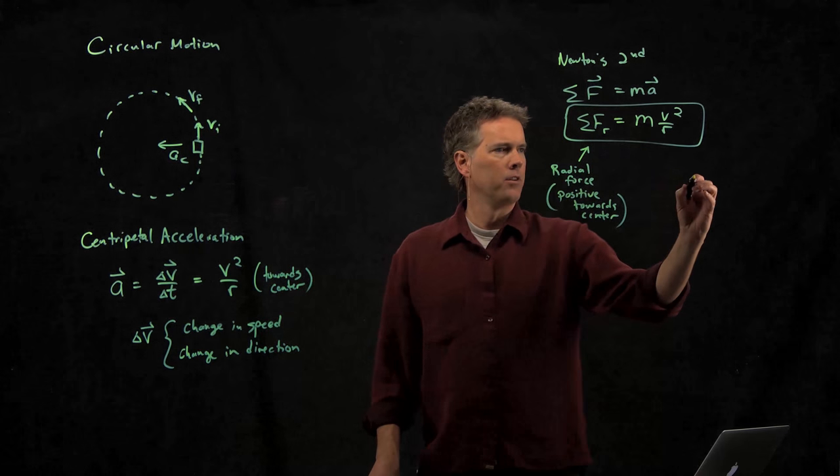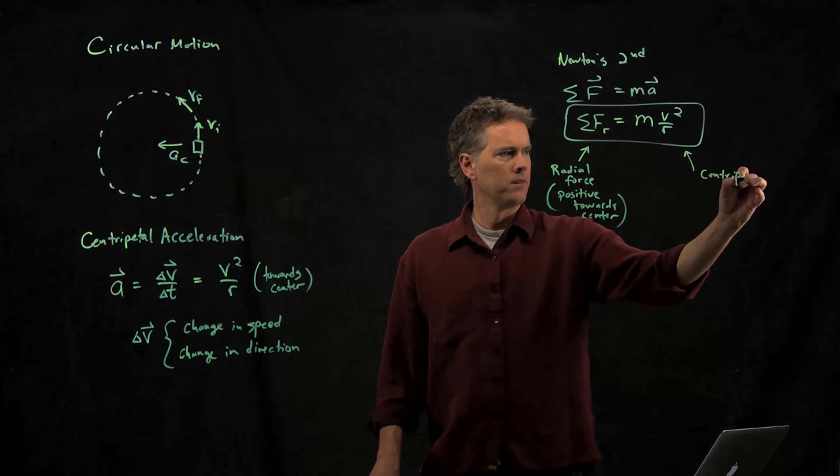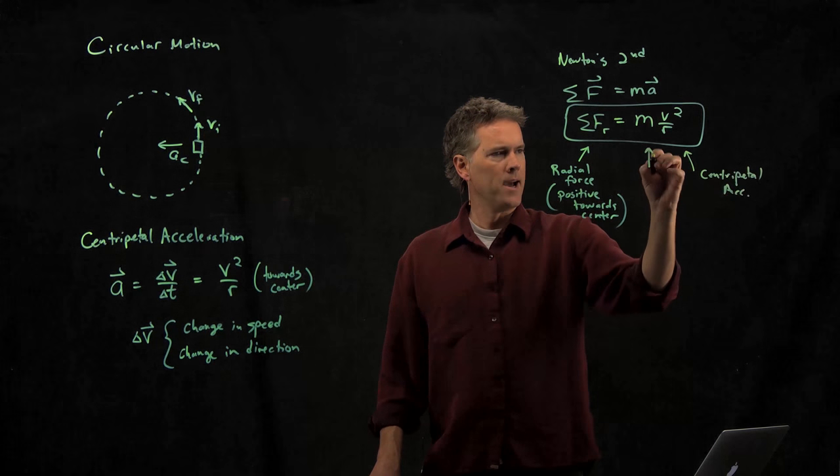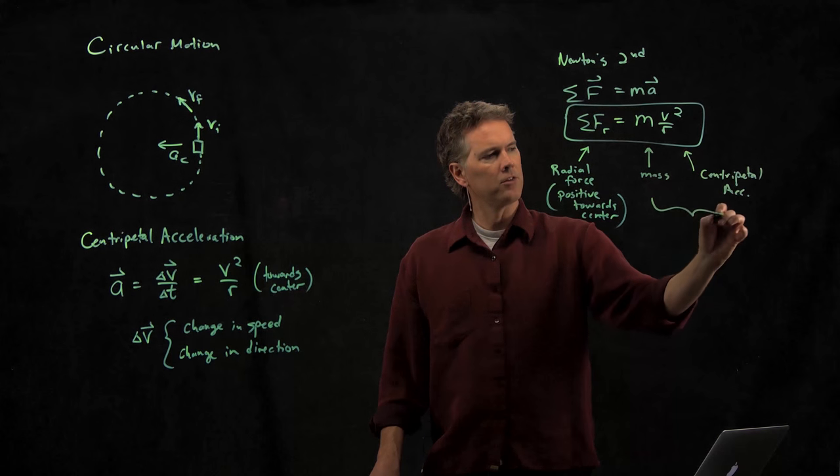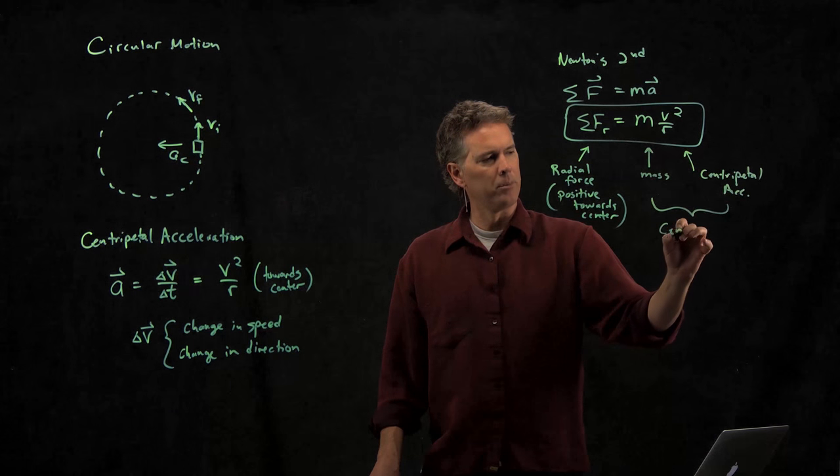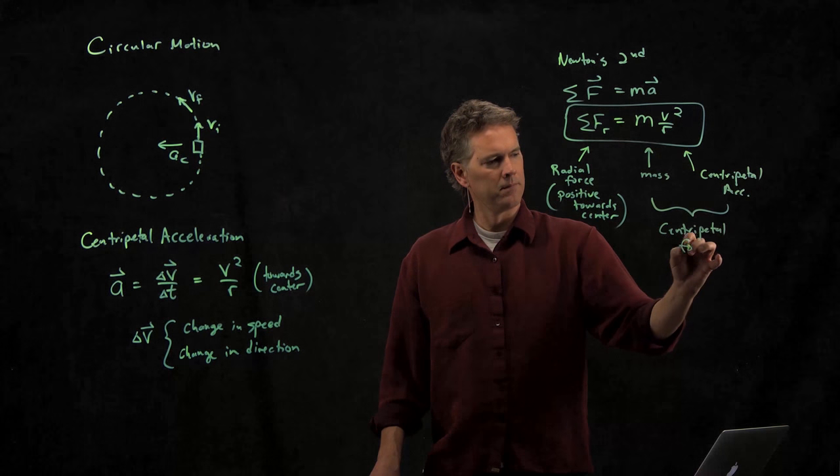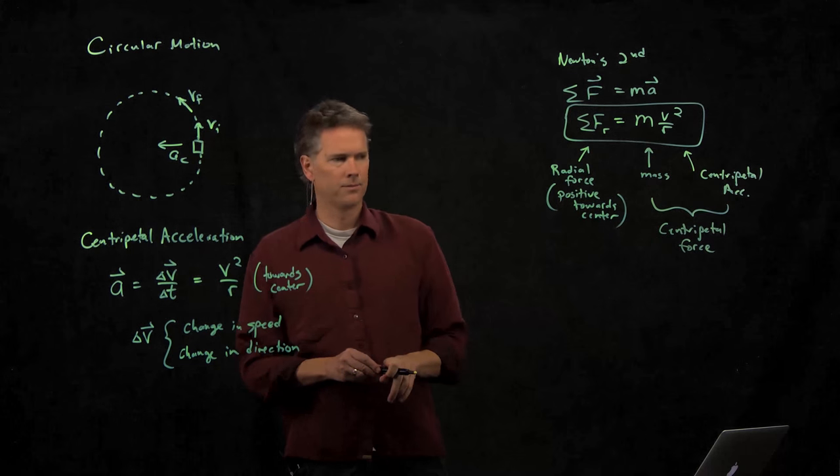This is a little bit different than you might normally think of a radial variable where positive would be out away from the center. Here we're using positive towards the center. This is, of course, centripetal acceleration. This is the mass, and those two things combined are what we call centripetal force.